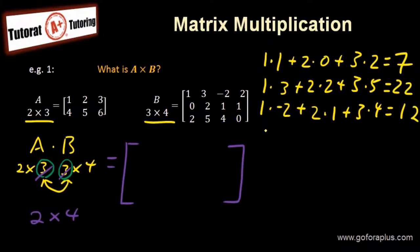The last column with the first row of A. So 1 times 2 plus 2 times 1 plus 3 times 0. This will give us 2 plus 2 is 4. 4 plus 0 is 4.